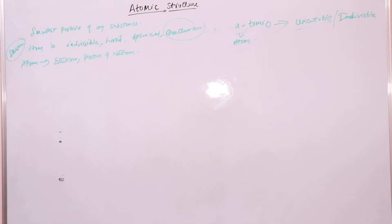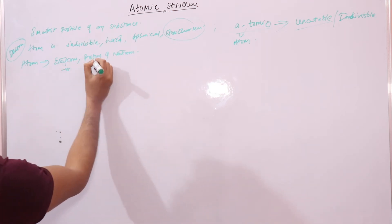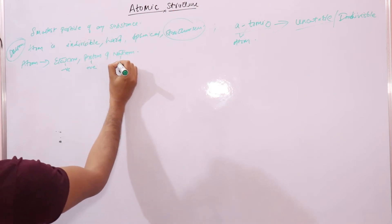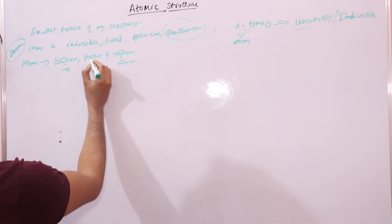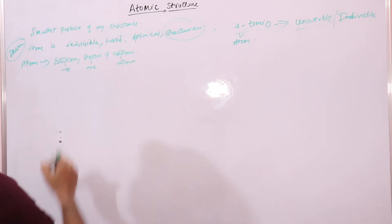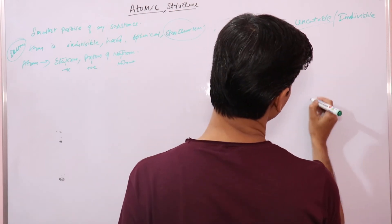Neutrons do not carry any charge — neutrons are neutral. Electrons carry a negative charge and are negatively charged. Protons are positively charged and neutrons are neutral. These protons and neutrons are found inside the nucleus.